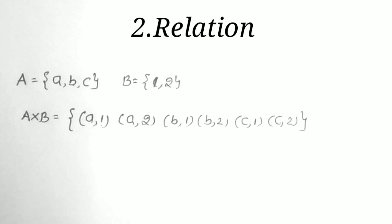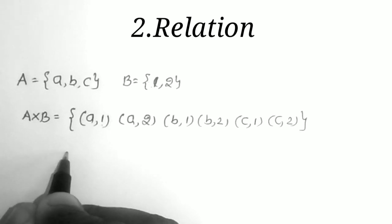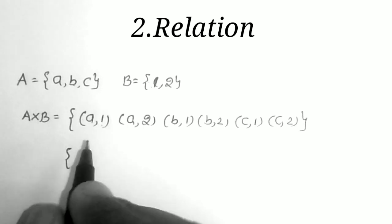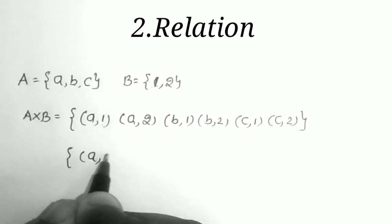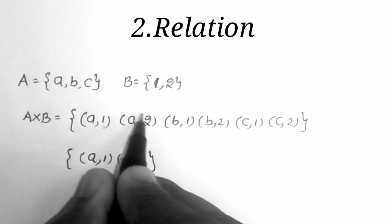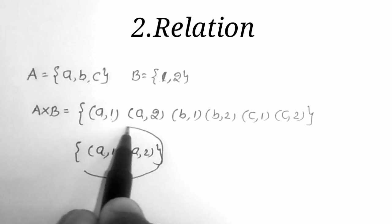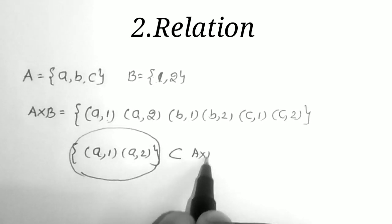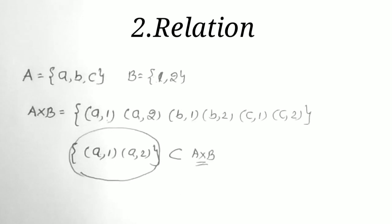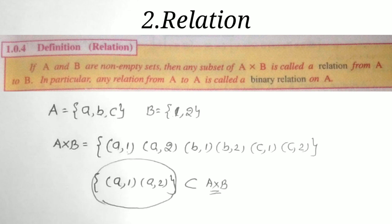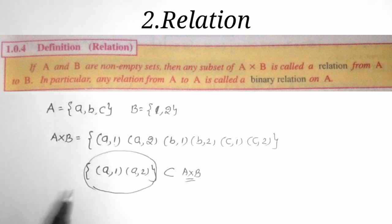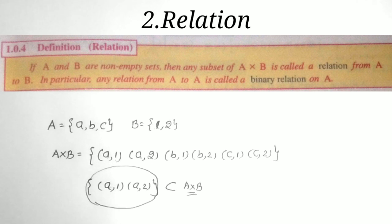The next definition is Relation. Any subset of A×B is called a relation. For example, from the Cartesian product I take only (a,1) and (a,2) — this subset is called a relation. If A and B are non-empty sets, any subset of A×B is called a relation from A to B. If we take a relation from A to A, that is called a binary relation.